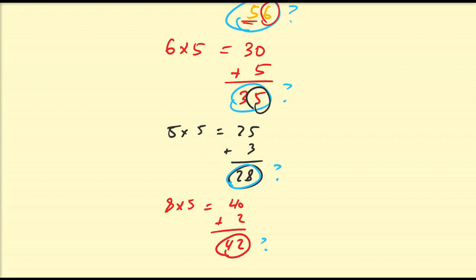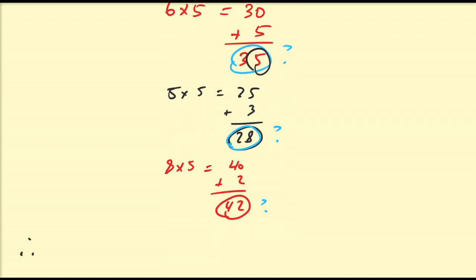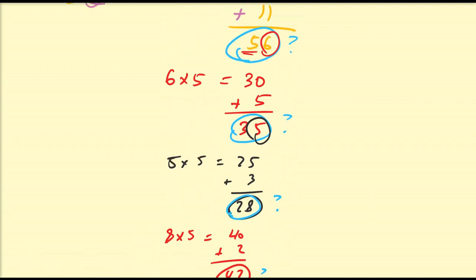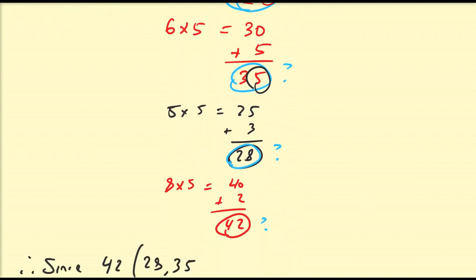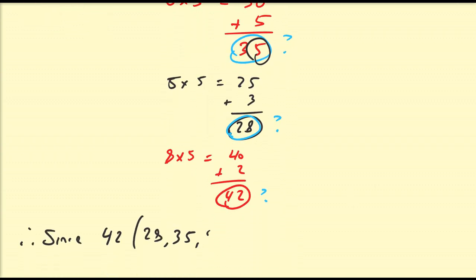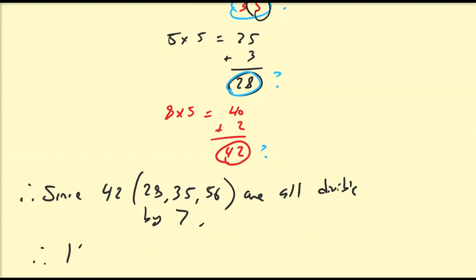You should have already known that some of these numbers are already divisible by 7, so we can conclude here. Therefore, since 42, 28, 35, and more so 56 are all divisible by 7, we can conclude that 119 is also divisible by 7.